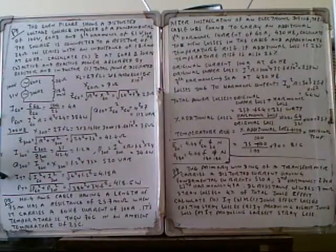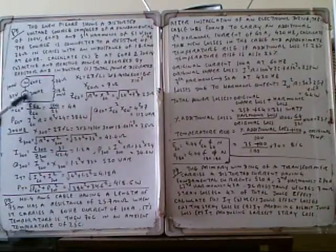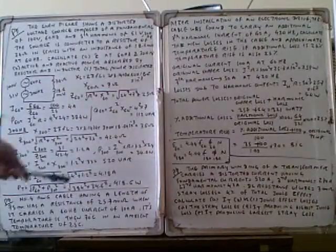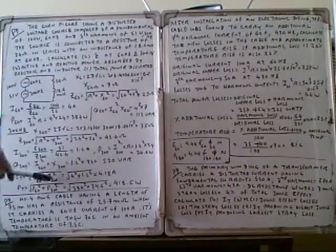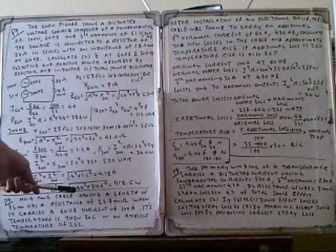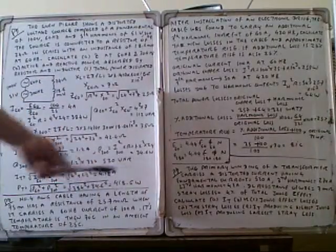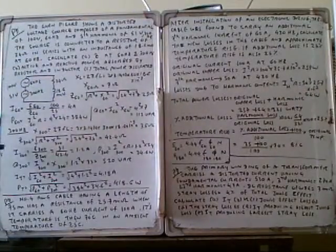We have to calculate the total current. Total current is the square root of - there are two sources, 60 Hz and 300 Hz - so I60 squared plus I300 squared. Square root of 4 squared plus 1.2 squared equals 4.18 amps. We also need to calculate the power at 60 Hz and 300 Hz. P_total equals square root of P60 squared plus P300 squared. Square root of 384 squared plus 34.6 squared equals 386.6 watts.